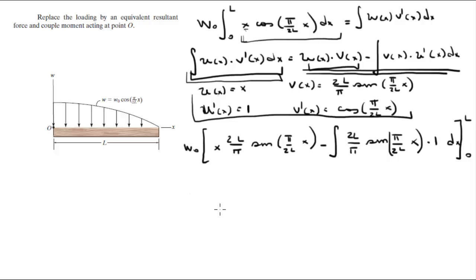So we keep solving this, you're gonna get this is equal to W naught X, 2L over pi sine of pi over 2L X, plus 2L over pi times 2L over pi cosine of pi over 2L X from 0 to L.